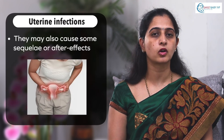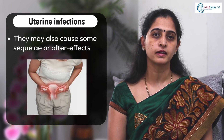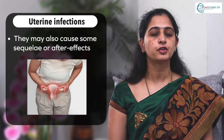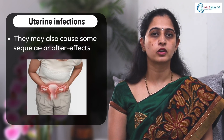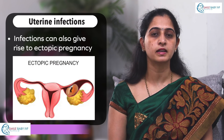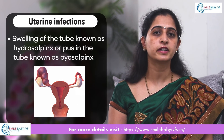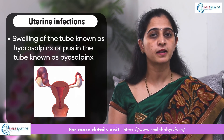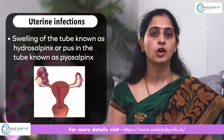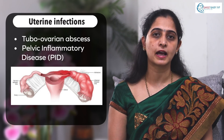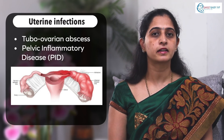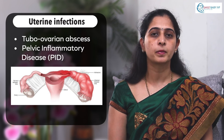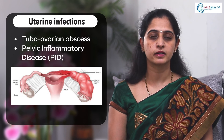Uterine infections are not present by themselves — they may also cause sequelae or after-effects. Apart from infertility, these infections can give rise to ectopic pregnancy, swelling of the tube known as hydrosalpinx, pus in the tube known as pyosalpinx, tubo-ovarian abscess, and PID or pelvic inflammatory disease.